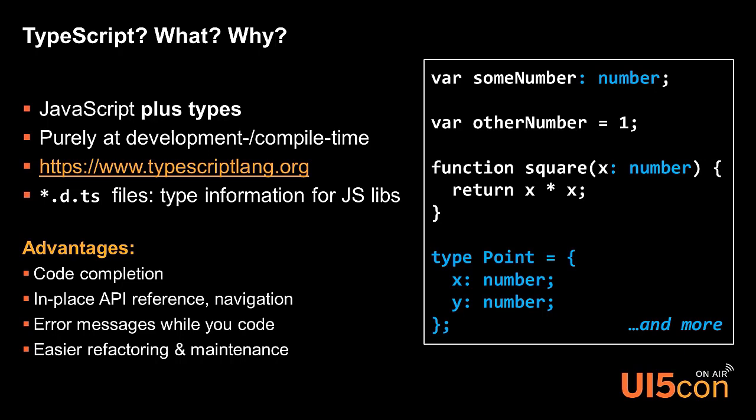As you can see on the right-hand side, the blue stuff is TypeScript and the white stuff is pure JavaScript. In the first line you see how the type 'number' is assigned to the variable as it's declared. In the second line, the variable 'other number' also gets typed as number through implicit typing — because of the assignment of the number one, TypeScript knows that automatically. There are more complex things like structures, enums, union types and so on.